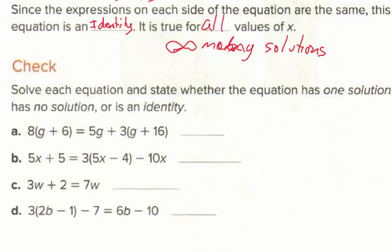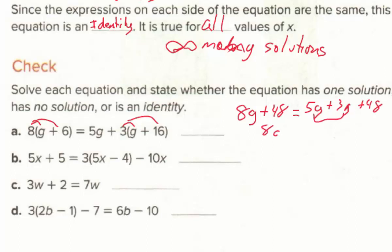For check part A, we distribute to get 8g + 48 on the left. On the right, distributing and combining 5g + 3g gives 8g, plus 48. Both sides equal 8g + 48. If we cancel the g's, we're left with 48 = 48, which is a true statement. So this is an identity.